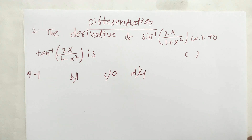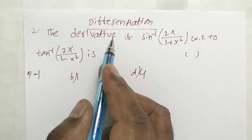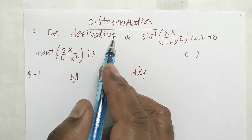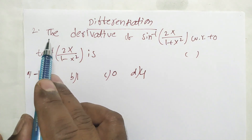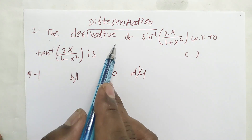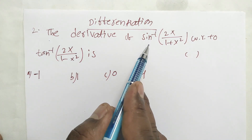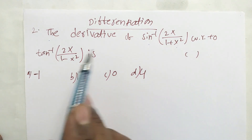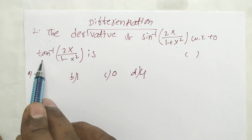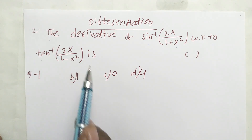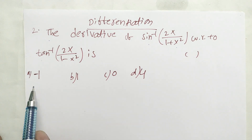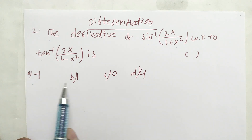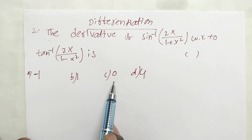Hi friends. This is an important problem on differentiation. Find the derivative of sin⁻¹(2x/(1+x²)) with respect to tan⁻¹(2x/(1-x²)). The options are: minus 1, 1, 0, or 4.